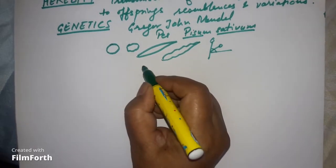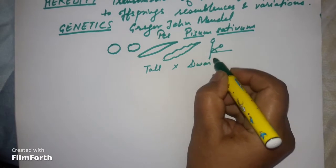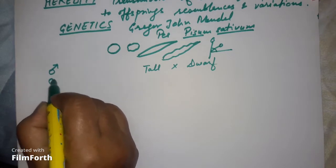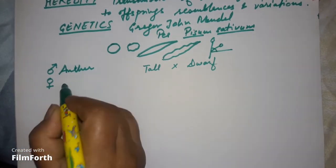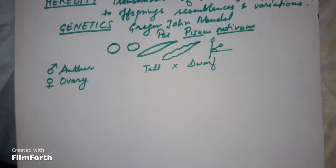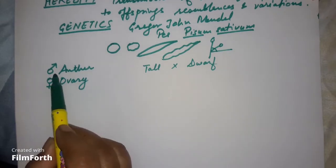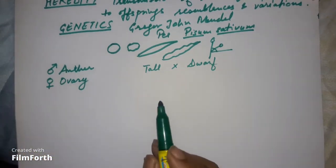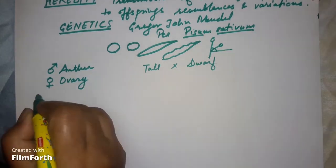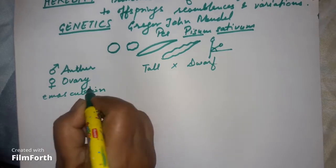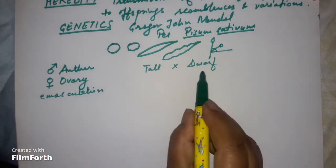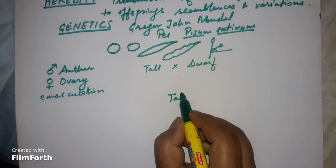Out of the seven characters, Mendel selected two variations per character — for example, tall and dwarf plants for height. He crossed these by removing the anthers from one plant, a process called emasculation, and then dusting the pollen onto the stigma of the other variant.